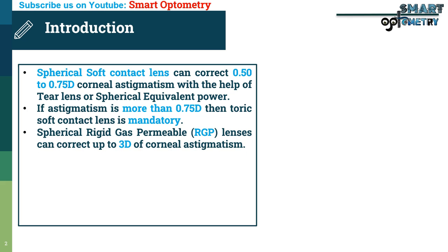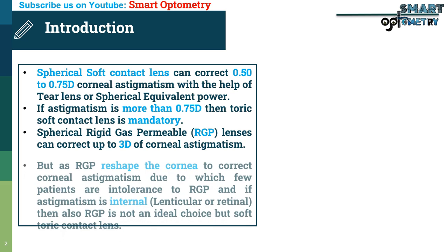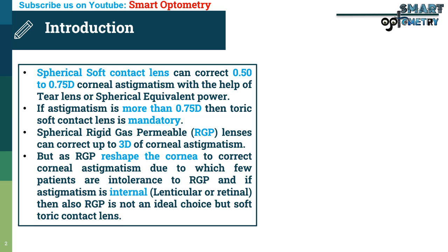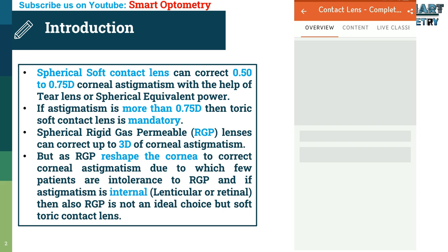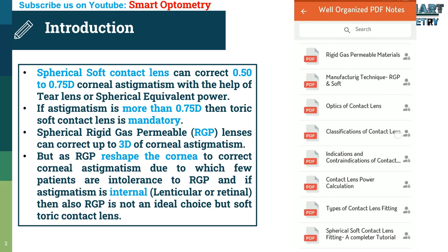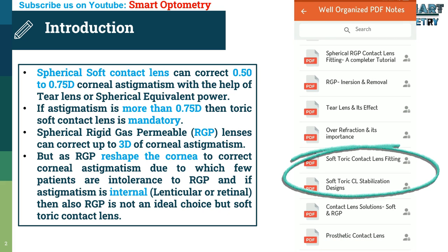Spherical rigid gas permeable (RGP) lenses can correct up to 3 diopters of corneal astigmatism. However, RGP reshapes the cornea to correct corneal astigmatism, due to which some patients are intolerant to RGP. Also, if the astigmatism is internal — that is, lenticular or retinal — then RGP is not an ideal choice; soft toric contact lenses are. For detailed notes on soft toric contact lens fitting and assessment, you can enroll in our contact lens course on the app Optometry Notes and MCQs, available on the Play Store.